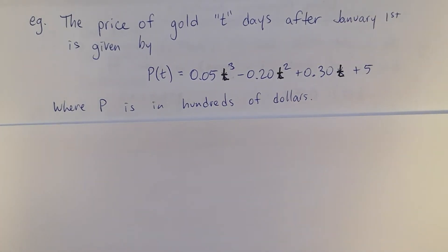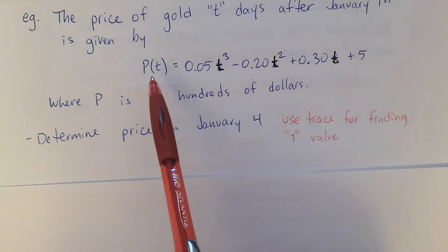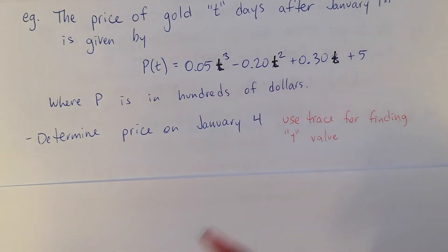So T is the number of days after January 1st. P is the price of the gold in hundreds of dollars, which is going to be important. So let's see what I've decided to ask us here. We're going to determine the price on January 4th. The price is a Y value. The Y is always on the left of the equal sign and then these are our X values. When you're finding a Y value you can use trace on your calculator, which I showed you one example of and I'll show you another one now.